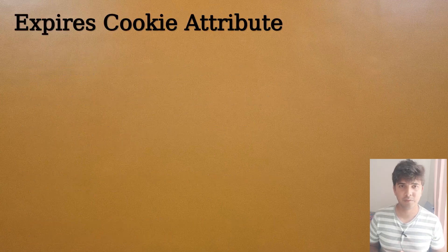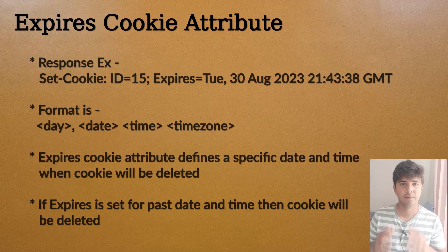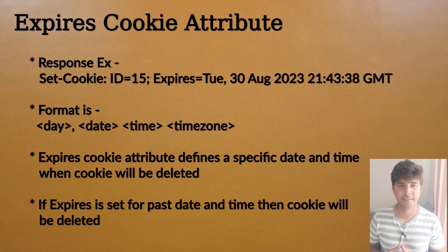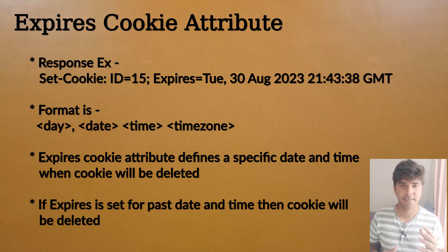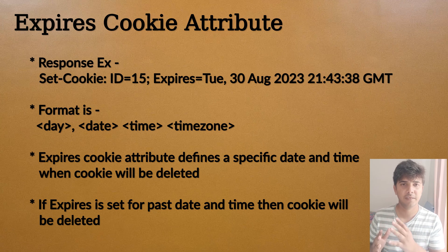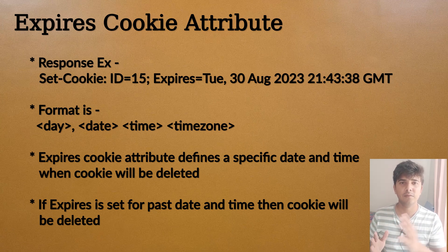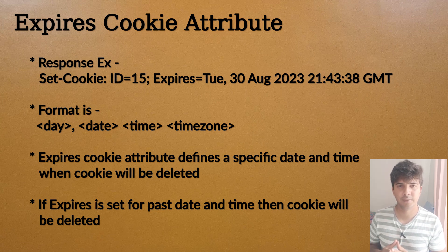After that we have the expires cookie attribute, which defines a specific date and time until which the cookie will be stored. As its value, it generally has the day, then the date, then the time, and then the time zone — which is generally given as the GMT time zone. Until that particular date and time is reached, the cookie will be stored, and as soon as the time frame elapses the cookie will be deleted from the browser.